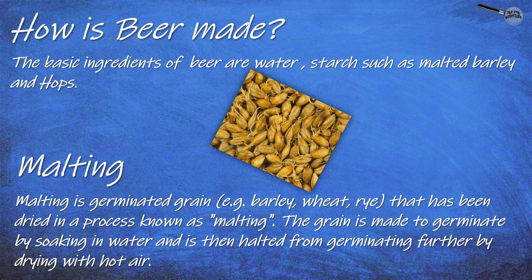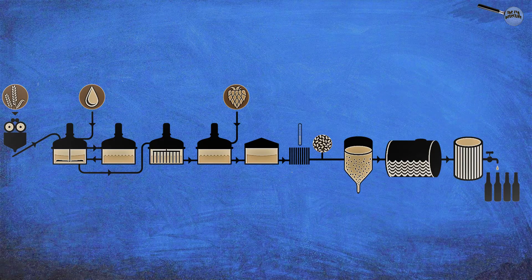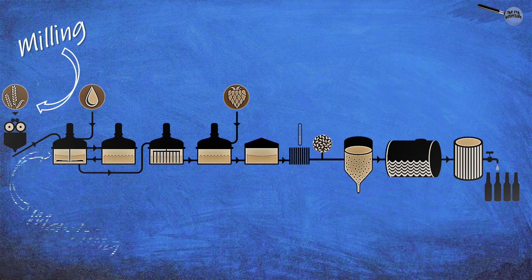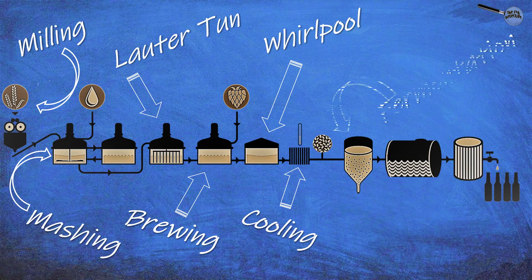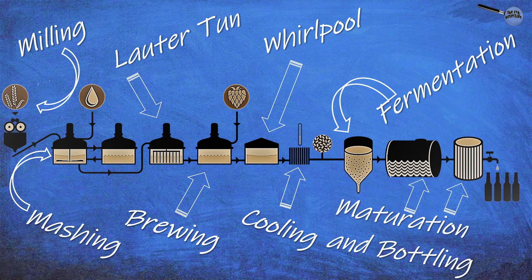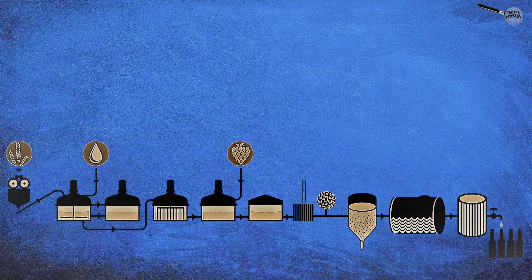Malting is germinated grain that has been dried in a process known as malting. The grain is made to germinate by soaking in water, and is then halted from germinating further by drying with hot air. The steps of brewing beer are: malting, milling, mashing, lauter tun, brewing, whirlpool, cooling, fermentation and maturation, and bottling.